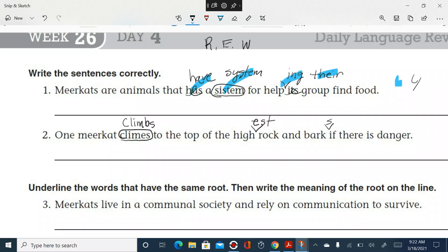What do you think? Anything else? Hey, use that chair. Yeah. Okay. You guys see anything else? We have three so far. One meerkat climbs to the top of the highest rock and barks if there is danger. Yes? Of a high rock? No. It's the highest, of the highest rock. Yeah. I think we're good. There's three. Three corrections.